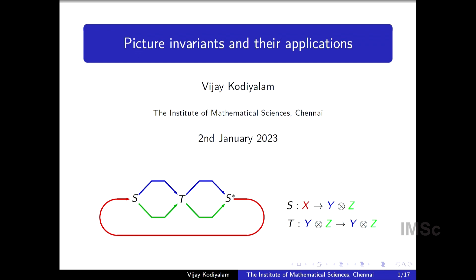As you can see in that one, T has inputs blue and green. So T goes from Y tensor Z and it has outputs also blue and green. So it goes into Y tensor Z. S goes from X, that's the red vector space to blue tensor green, that's Y tensor Z. I'll get more into picture invariants a little later. But first of all, invariants are certainly very important in mathematics. And if you see even the titles of the talks for this conference, you'll see that at least three of the mathematics talks have invariants in the title.